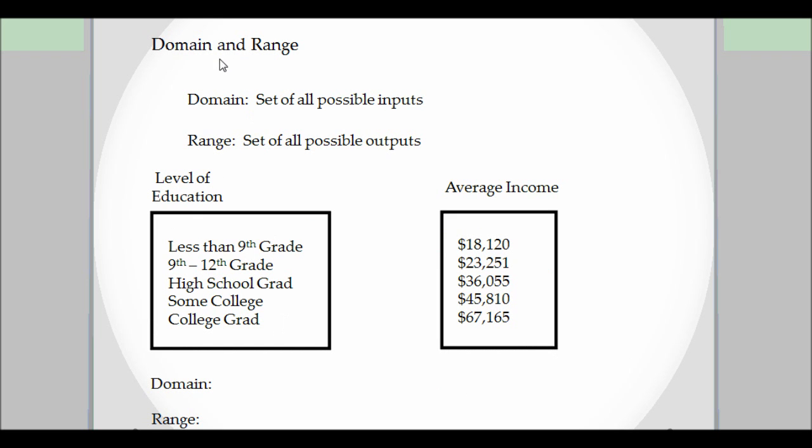Let's talk about domain and range. Domain is the set of all possible inputs. Range is the set of all possible outputs. So here's an example from your textbook, a level of education. We got didn't get into high school, didn't finish high school, this is graduating high school, some college, and then a college grad. And these are the associated incomes.